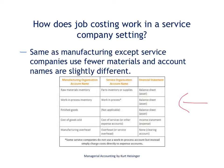This chart shows the accounts used for a manufacturing organization and the accounts used for a service organization, drawing the distinction between the two. As we've talked about in previous videos, in a manufacturing organization there are three inventory accounts: the raw materials inventory account, the work-in-process inventory account, and the finished goods inventory account.